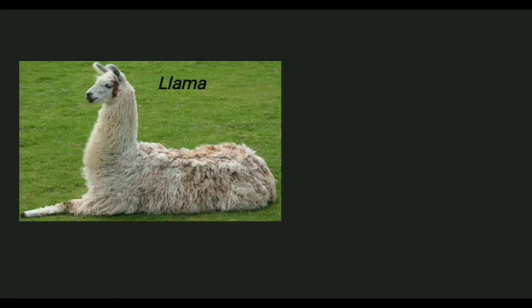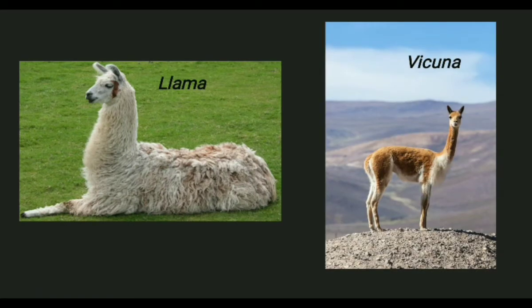High altitude animals like Llamas and Vicunas are examples. Compared to the same animals at low altitude, their hemoglobin has higher oxygen affinity, which is an adaptation to the high altitude body conditions.